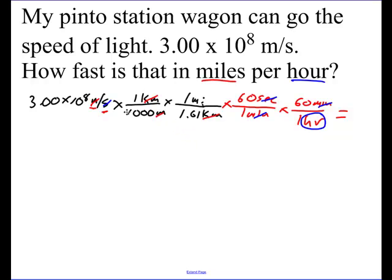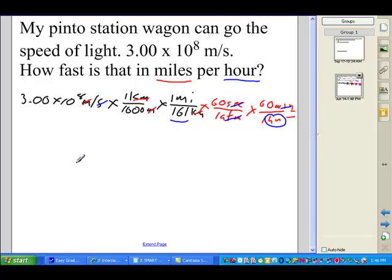When I put that in my calculator, I take that scientific notation, divide it by 1,000, divide it by 1.61, and that gives me an answer of 6.70801 times 10 to the 8th miles per hour. But let's look at our significant figures. We've got 3 right there, so I've got to report this to 3. So since I'm cutting off right there and I'm cutting off an 8, I've got to raise this up. So 6.71 times 10 to the 8th miles per hour.